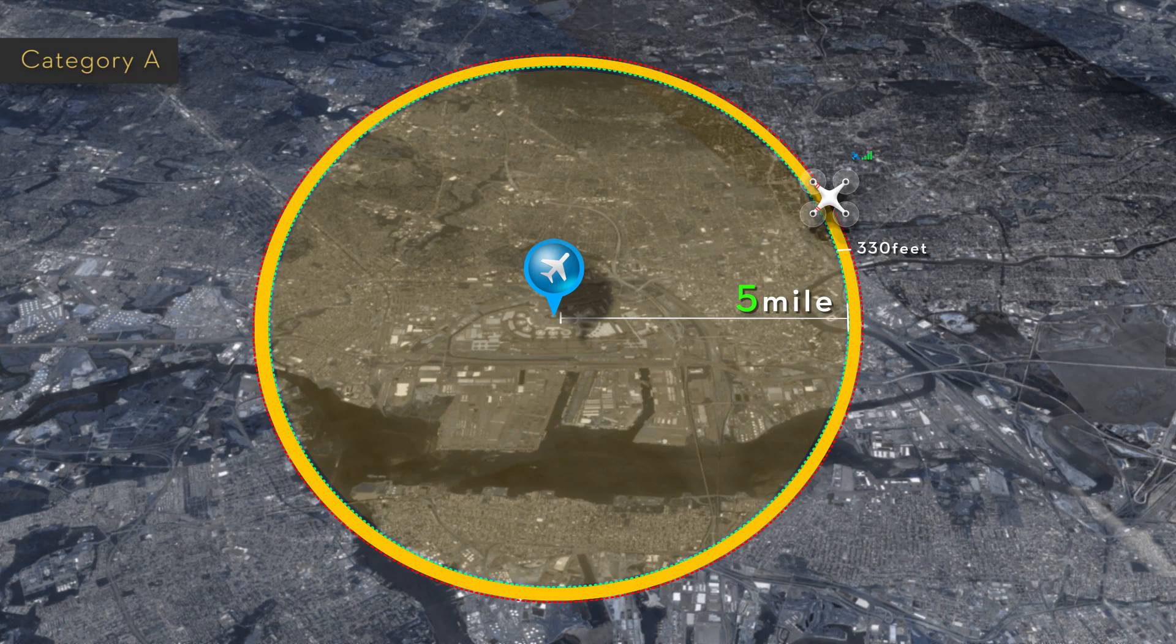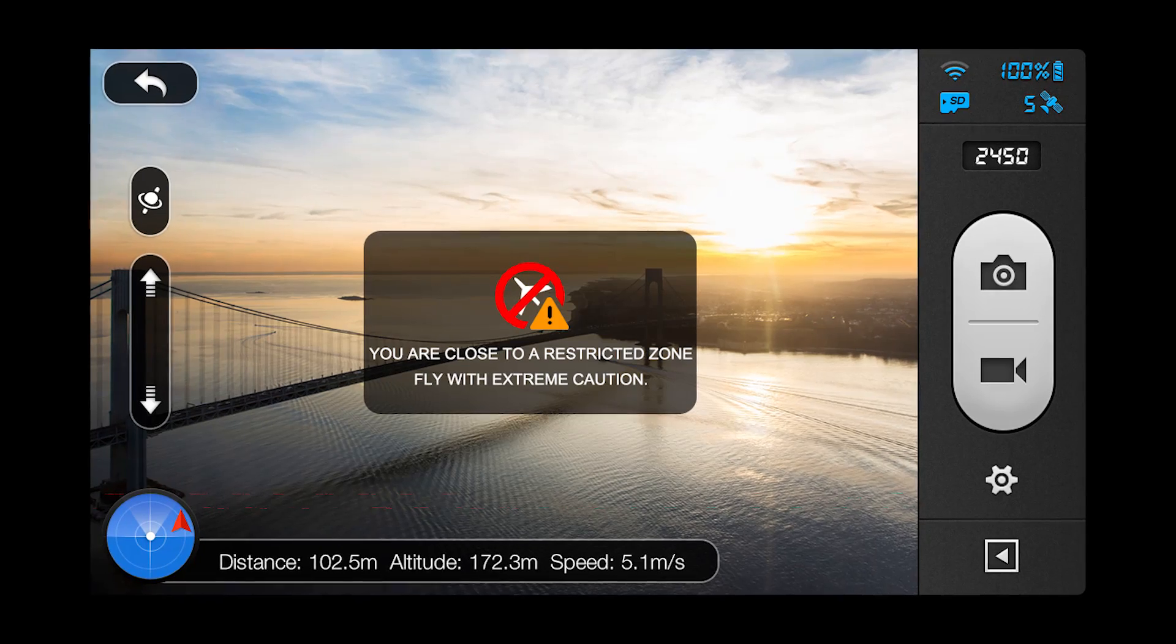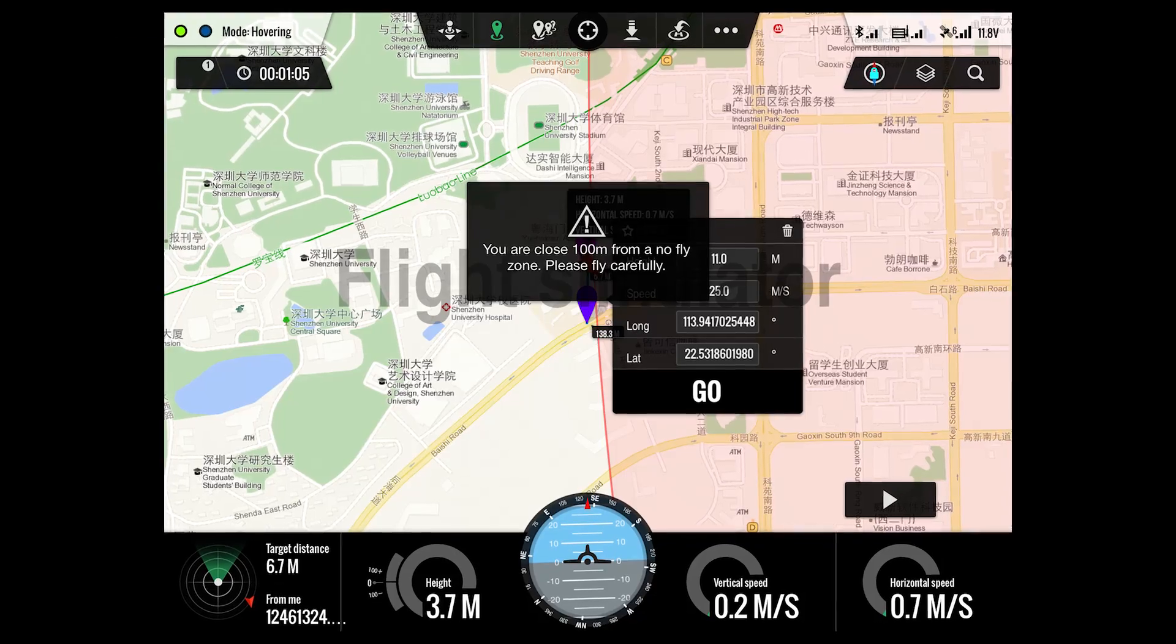If you are using the Vision or Ground Station app, you will be warned in advance if you are within 330 feet or 100 meters of entering a Category A safety zone.